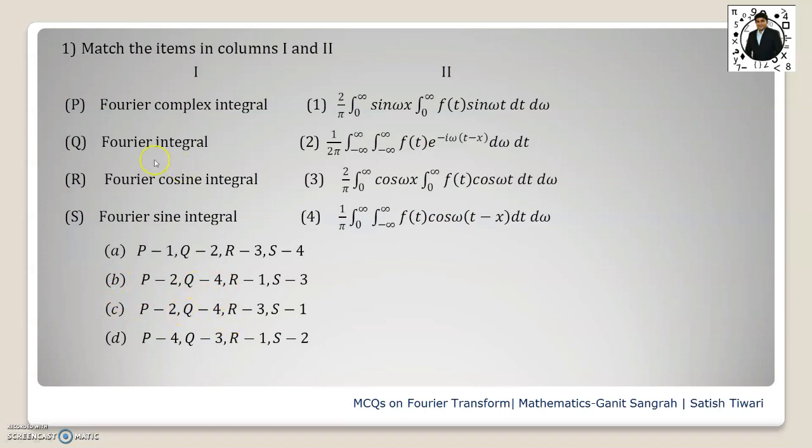Now Q is mapping to 4. So that is Fourier integral, this one. That is also correct. Now we have to match the Fourier cosine integral. If you observe, option 3 is correct here because cos(ωx) and cos(ωt) is coming here in the formula.